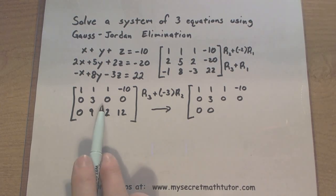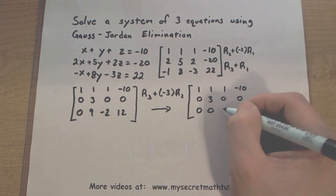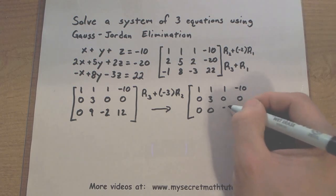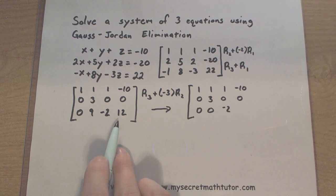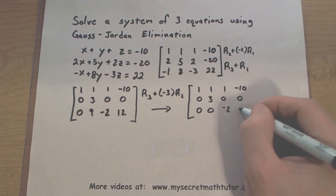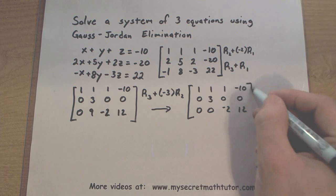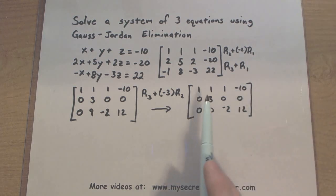Negative 2 plus a negative 3 times 0, looks like we get basically a negative 2. 12 plus a negative 3 times 0, looks like just a 12. Things are looking pretty good, we're getting 0s beneath this lower diagonal here.